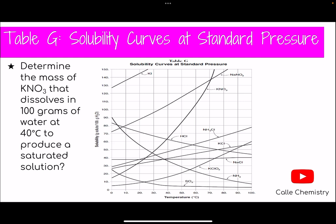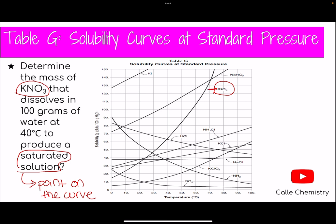Let's go to the first one. It says: determine the mass of KNO₃ that dissolves in 100 grams of water at 40 degrees Celsius to produce a saturated solution. Saturated solution — right then and there, they're asking me for a point that is on the curve. They didn't say unsaturated or supersaturated; they said saturated, which means on the curve. They said the solute is KNO₃, so I'm going to go to Table G and look for KNO₃. I see it right here, and there's a little arrow telling me which curve it is, so I'm going to outline it.